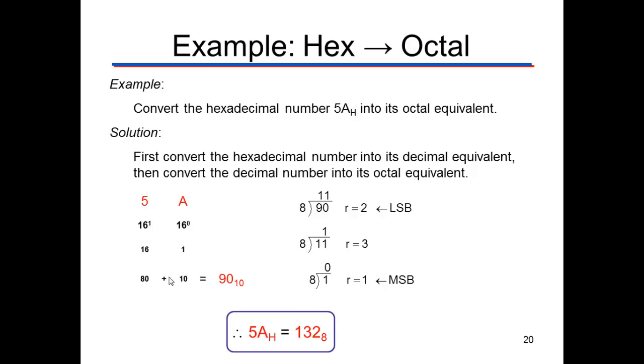Then we have to go through the successive division process to get to 1, 3, 2 base 8 is the same as 5A base h or base hexadecimal. So you can see it's the same thing, but we have to go through an intermediate, which is decimal.